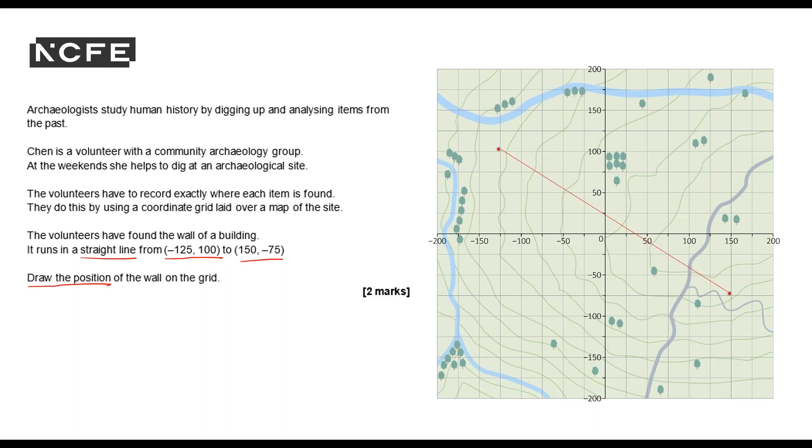If I was doing this paper-based I would use a ruler. If I was doing this in an online assessment then I would use the online drawing tools. So I'm just going to double check that I've answered the question. It's a straight line from minus 125, and these must go up in 25, 50, 75, 100, yep, so minus 125, 100, yes that's correct. 150 and then minus 75, so yeah that's correct and I've drawn the straight line so I'm happy with that. I can move on to my next question.